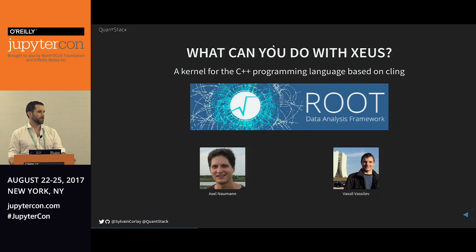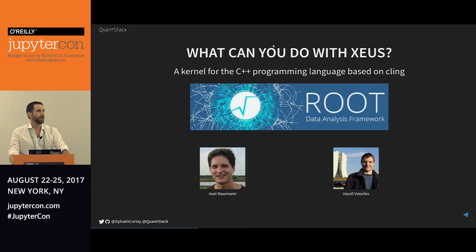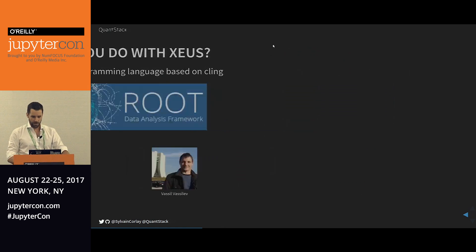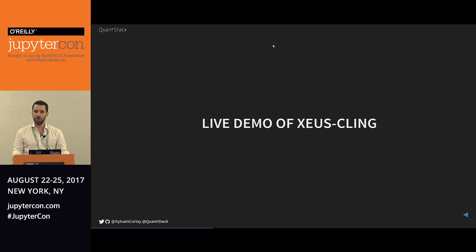We decided to show off a little bit by creating a kernel for the C++ programming language based on Cling. Cling - it's C-L-I-N-G, not a typo - is a C++ interpreter that was developed at CERN as part of the ROOT data analysis framework. The two main authors of that interpreter are Axel Naumann and Vasil Vasilev. If you know what C++ compilers do, you realize how much of a tour de force writing a C++ interpreter must be. This is literally incredible and actually functional. Now I'm going to leave it to Johan for a live demo of the C++ interpreter.